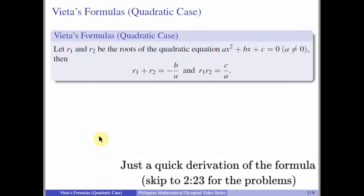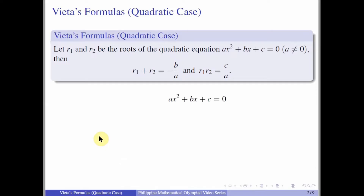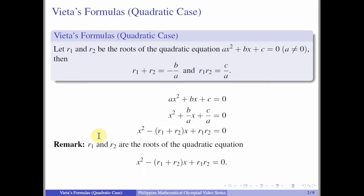Going back to the quadratic equation, since A is non-zero, we can safely divide both sides by A, giving x² + (B/A)x + (C/A) = 0. Using Vieta's formulas to rewrite the coefficients, we get x² - (R₁ + R₂)x + R₁R₂ = 0. So the leading coefficient is 1, the coefficient of x is the negative sum of the roots, and the constant is the product of the roots.